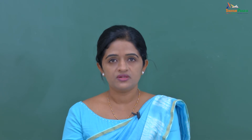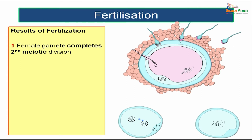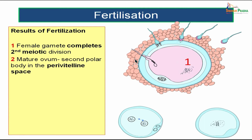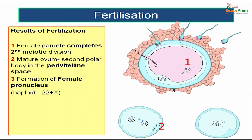The secondary oocyte will be arrested in the metaphase of the second meiotic division. That is the stage at which the ovum is released from the ovary. That second meiotic division will be completed only during fertilization — when the sperm enters the secondary oocyte. You will then have a mature ovum with the second polar body released. The first polar body will be there in the perivitelline space at the time of fertilization, and after fertilization it will release one more polar body, the second polar body, so there will be two polar bodies in the perivitelline space.